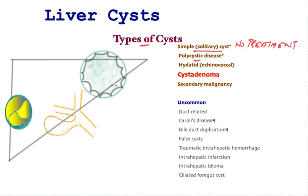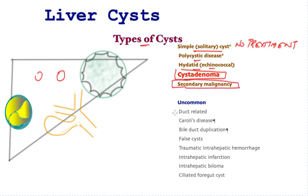Polycystic is a variant of genetic origin and there are many cysts within the liver — again detailed in a separate linked video. Hydatid cyst is common in sheep-rearing parts of the world due to infestation, with more details in a separate video. Cyst adenoma is a particular kind of cyst that will be detailed later. Cysts may also be due to cancers that have spread to the liver from other parts, and there are several other less common and rare causes outlined for specialist interest.